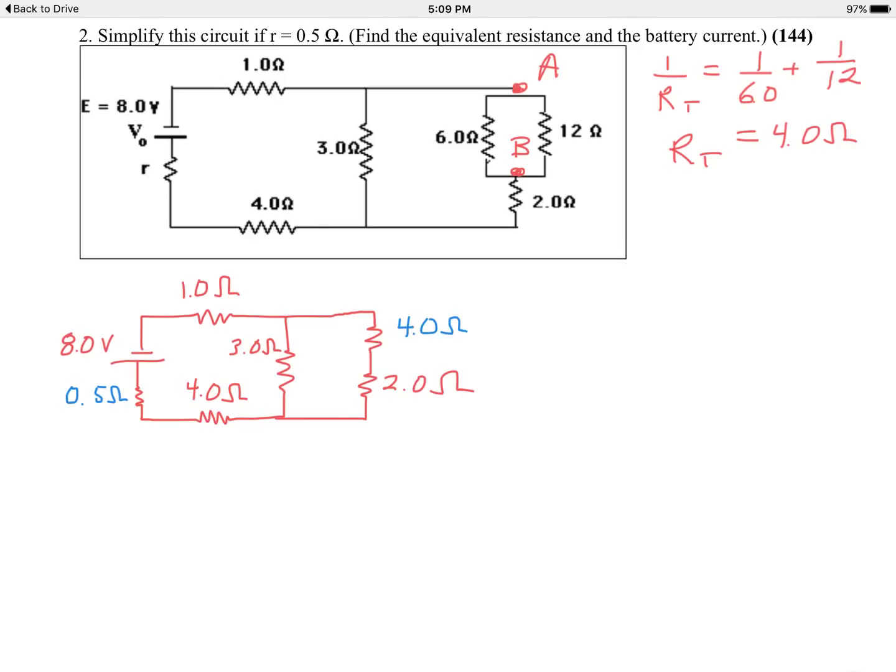All right, next step. The 4 and the 2 ohm resistor on the far right are in series, and that's an easy combination because you just add those. 4 plus 2 is 6, so I'll draw that new diagram. So the 6.0 ohm resistor replaces the 4 and the 2. Hopefully you're starting to see a pattern here now.